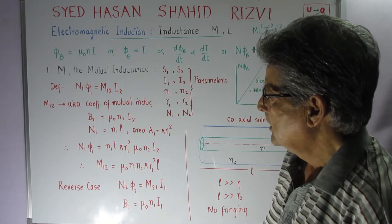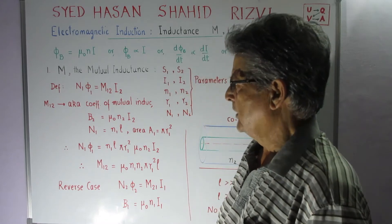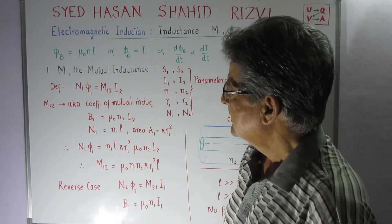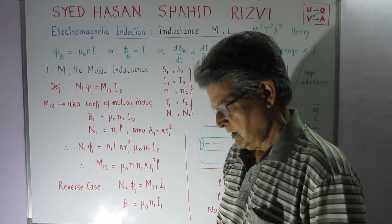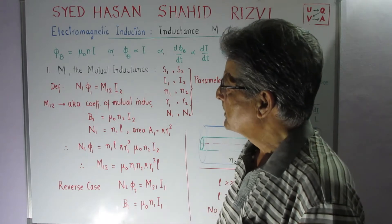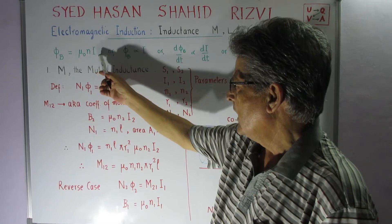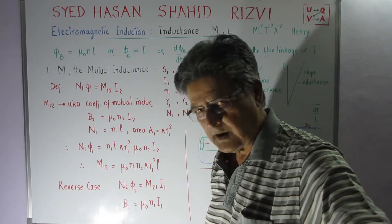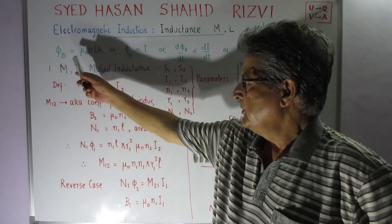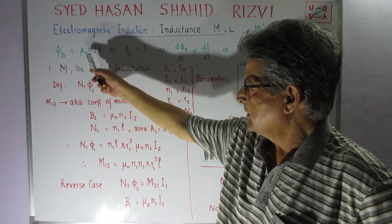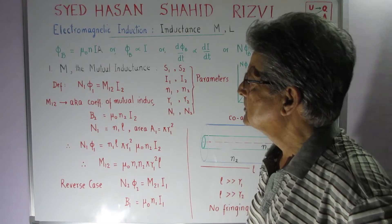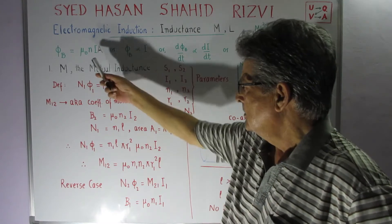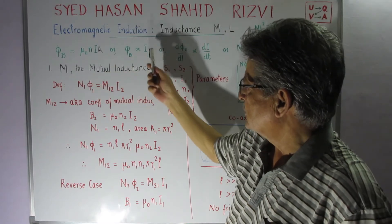Now, if there is a long solenoid, the magnetic flux is given by B = μ₀nI, so the flux φ_B = μ₀nI·A, where A is the cross-sectional area. Since φ_B = B·dS, we find that φ_B is proportional to the current I.